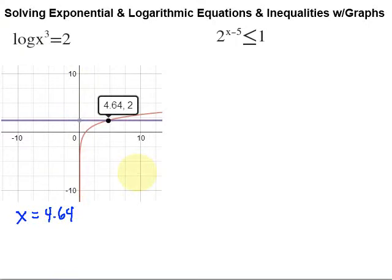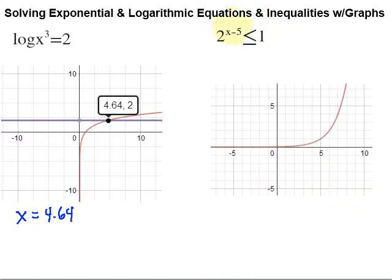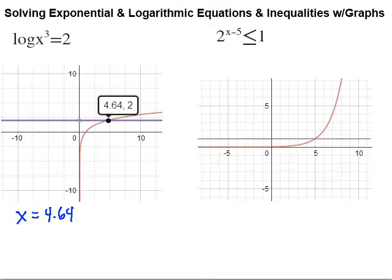We can use a similar method to solve inequalities as well. We start out exactly the same way: graph what's on the left-hand side setting it equal to y, and graph what's on the right-hand side setting it equal to y. The first graph — y equals 2 to the x minus 5 power — gives me that curve. Then I graph the other part, y equals 1, which is this purple horizontal line going through 1.